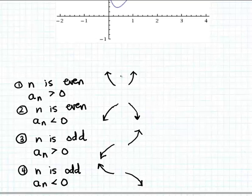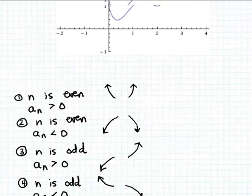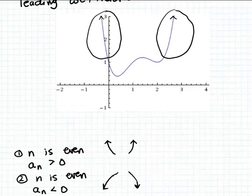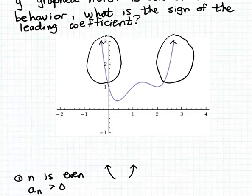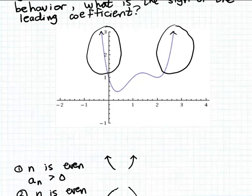So, this tells us then that our function g must have even degree, but more importantly, for this problem, it must have a positive leading coefficient. So, we can deduce from the end behavior of the graph of our polynomial function that the leading coefficient is positive.